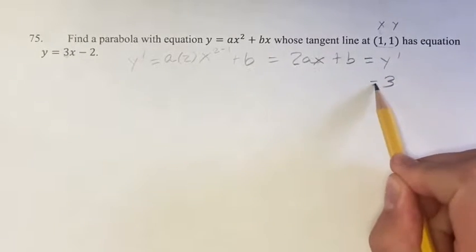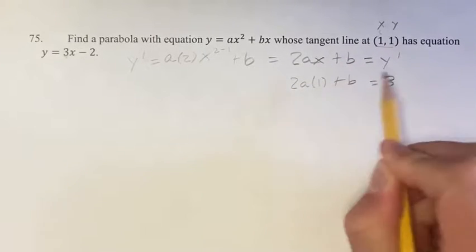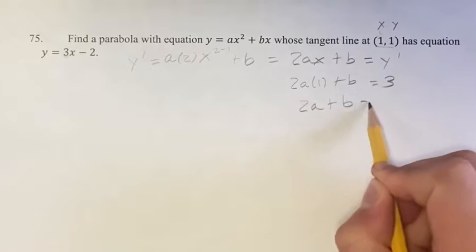So 3 is equal to 2ax plus b when x is equal to 1. Plugging in 1 for x, we get that 2a plus b is equal to 3.